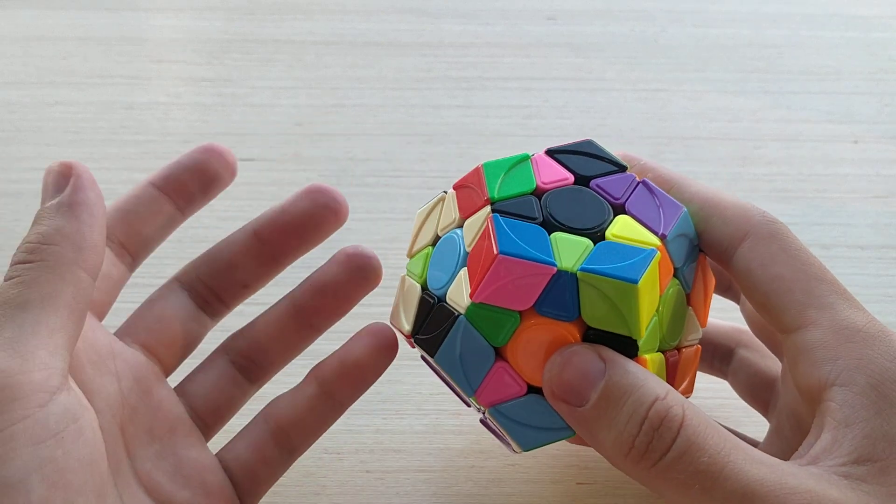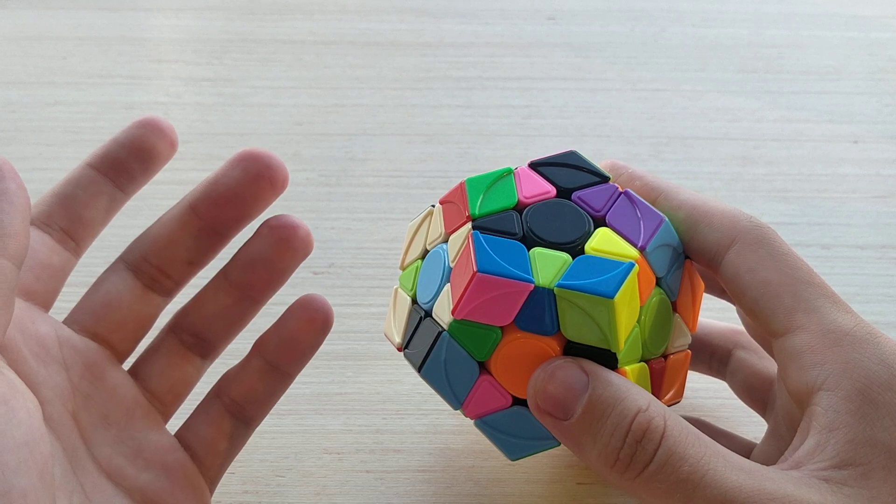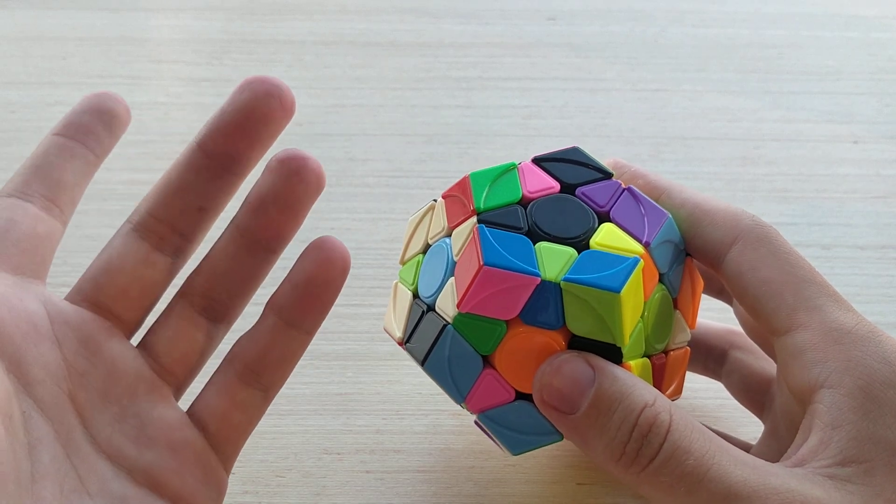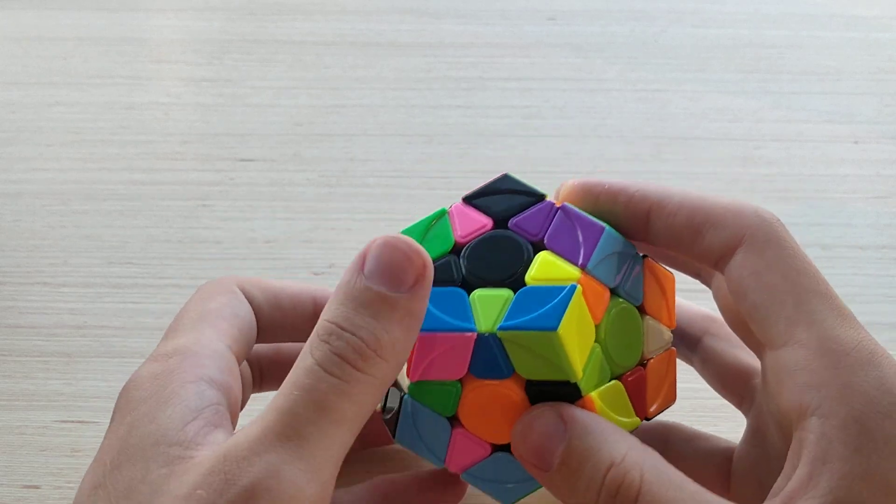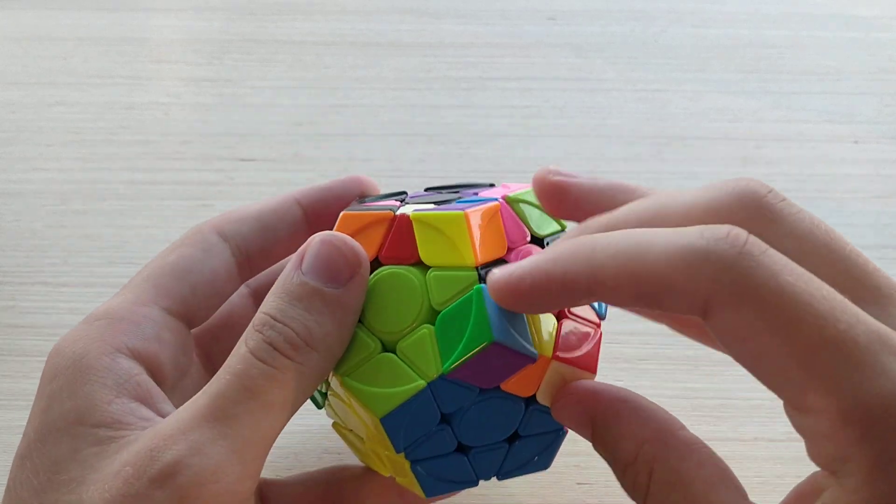Now I'm color-neutral S2L, so I just kind of do the first thing that I see. It might not be the best thing, but here the first thing I saw is this piece, this piece, and this one. So I'll solve them like that.